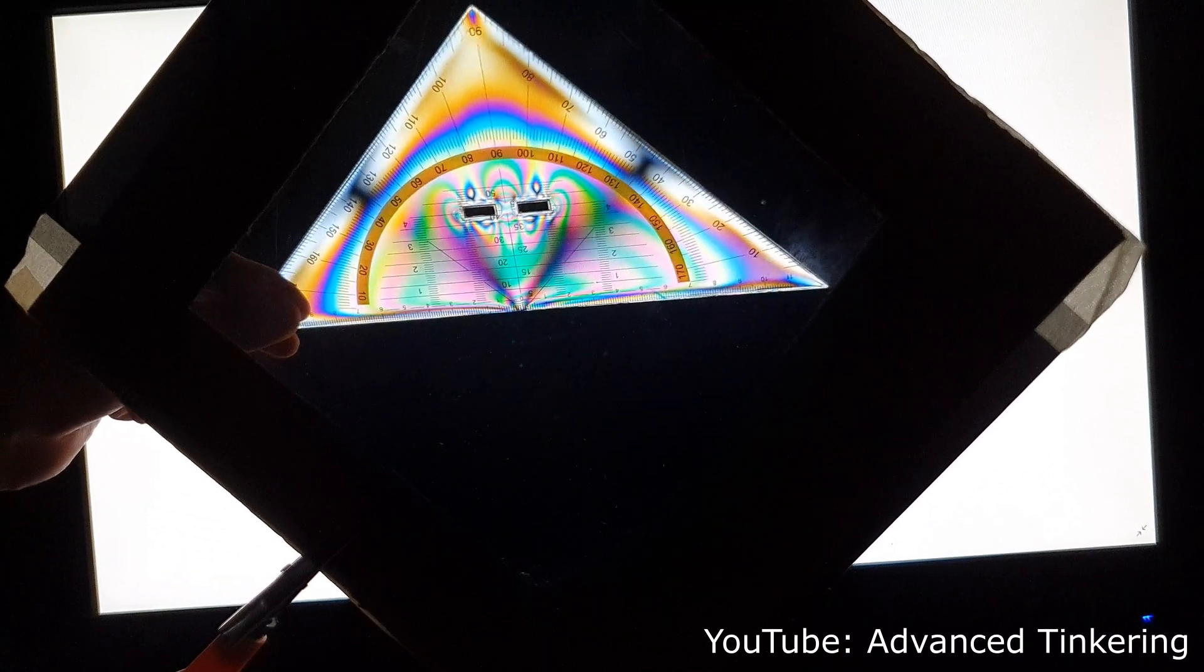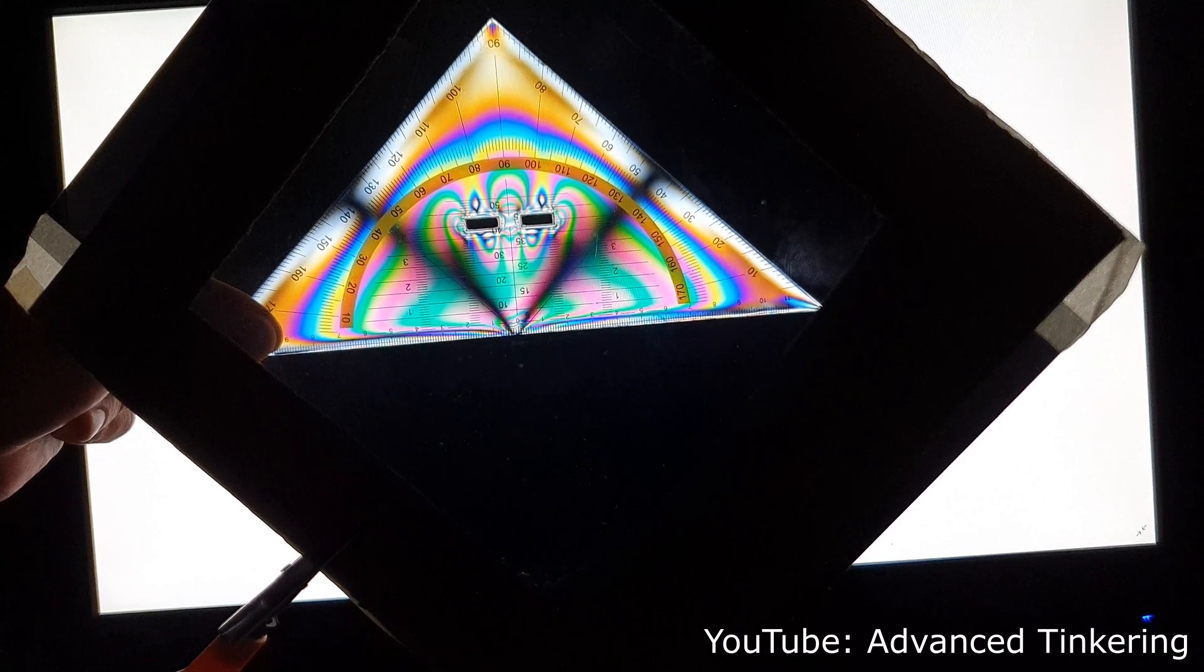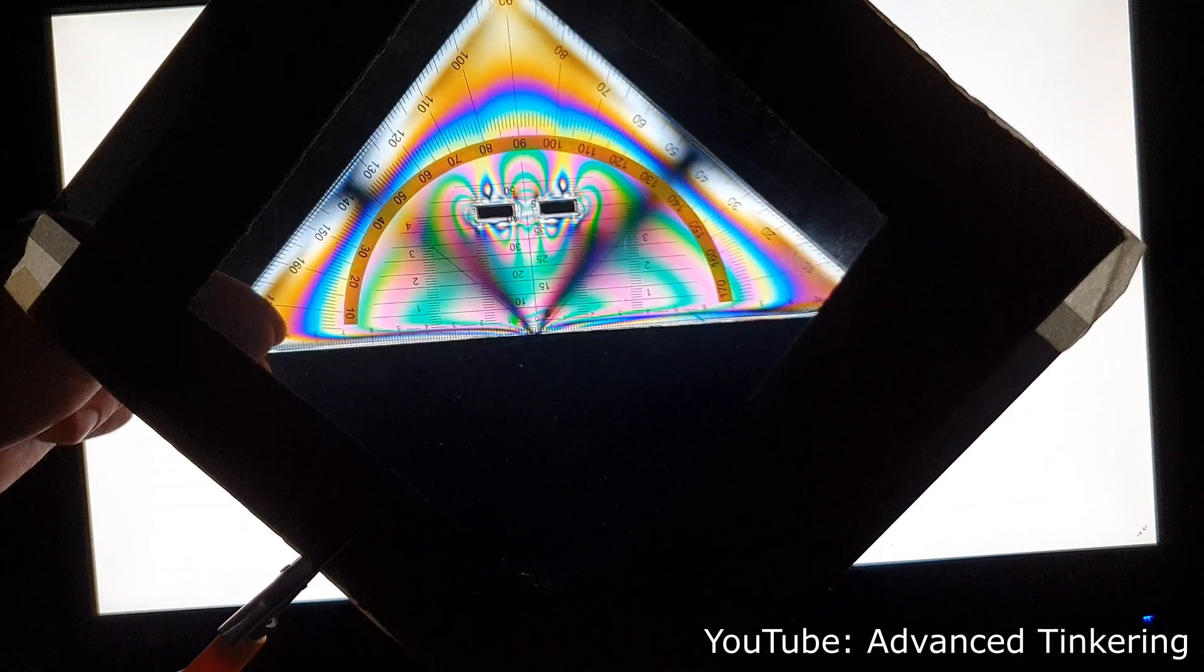Of course, you can not only look at glass. Other translucent materials show the same property, like plastic for example. Due to the effect of birefringence, you can see the stress as colored lines.